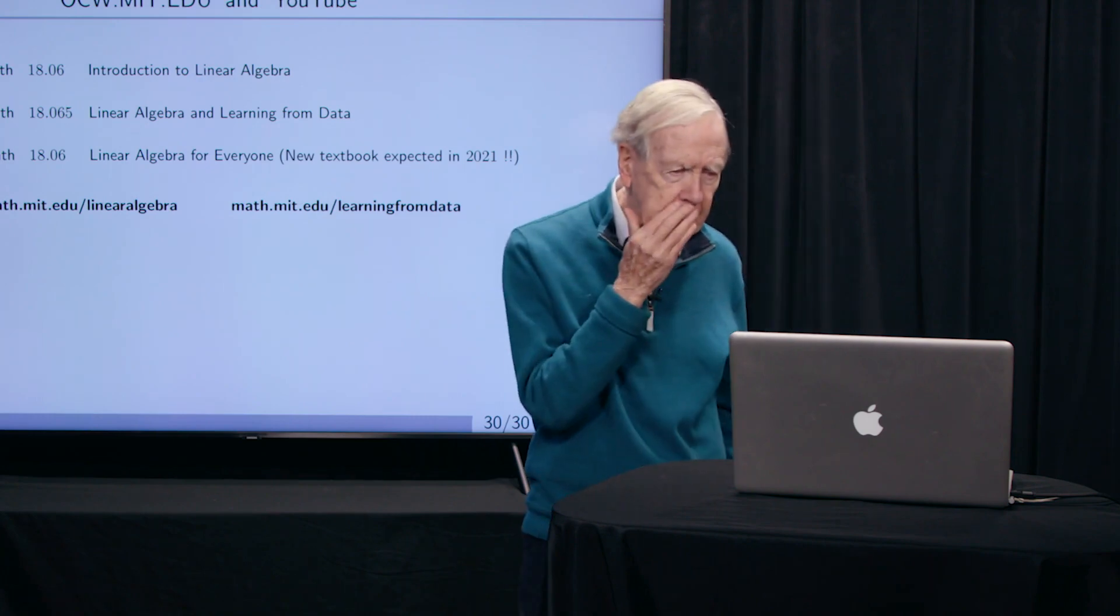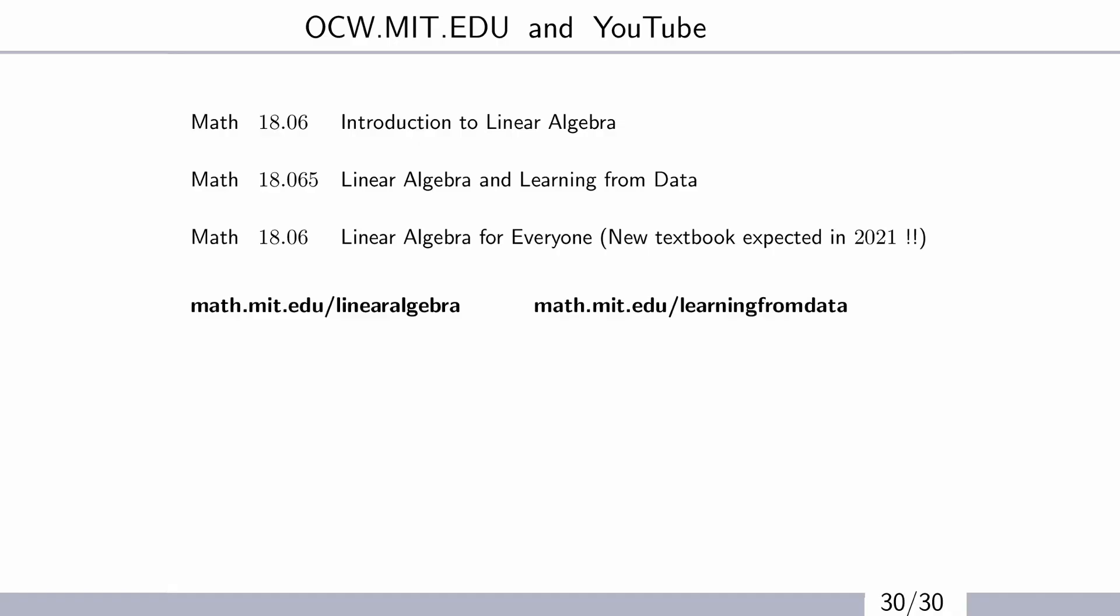Oh, this is maybe the last slide to just help orient you in the courses. So at MIT, 18.06 is the linear algebra course. And maybe you know 18.06 and also 18.06 Scholar SC on OpenCourseWare.